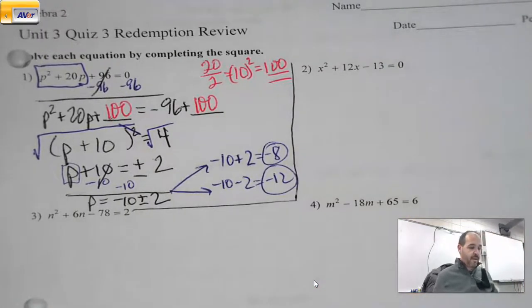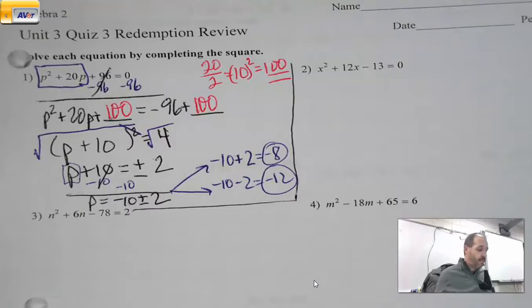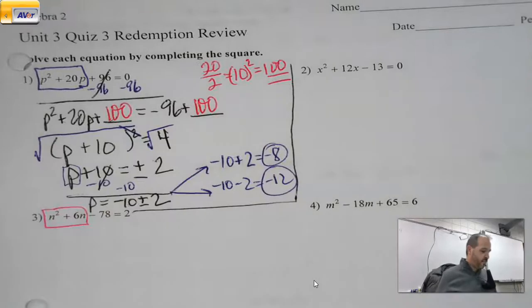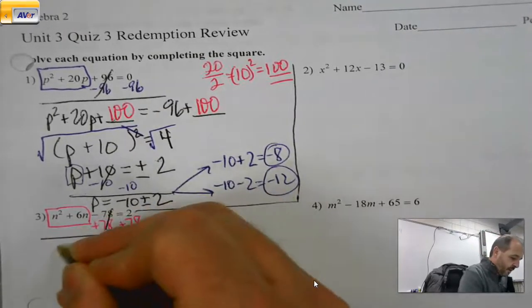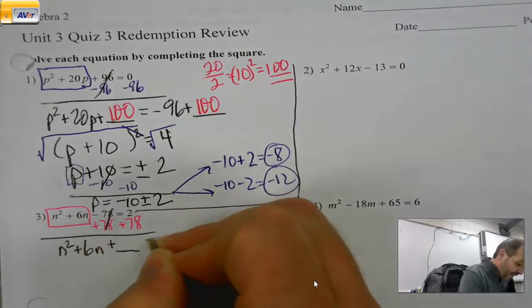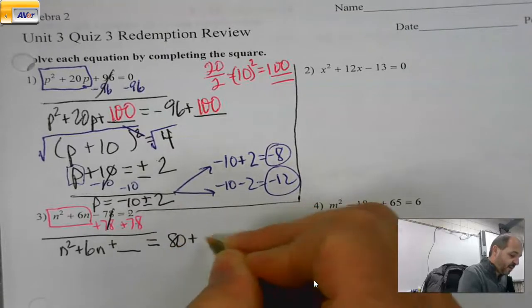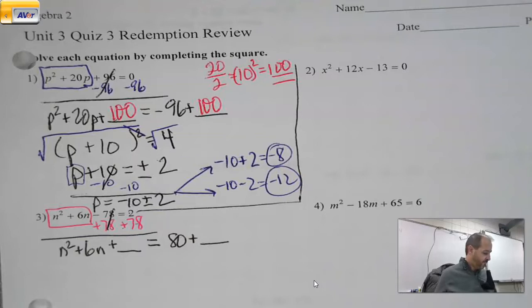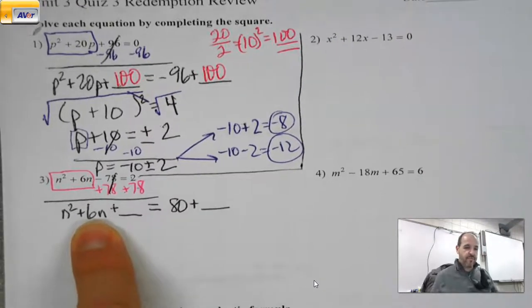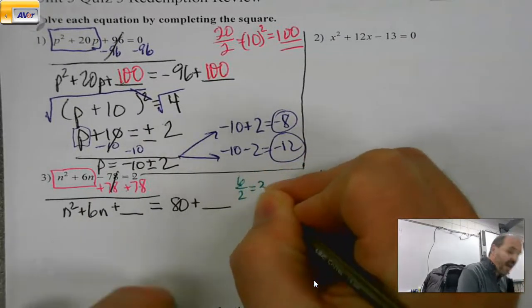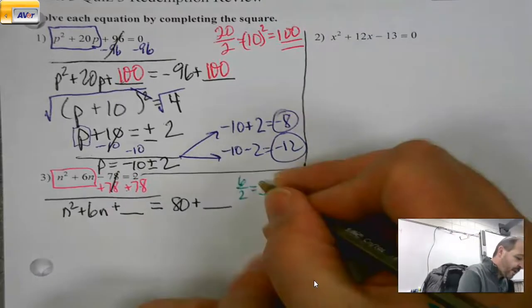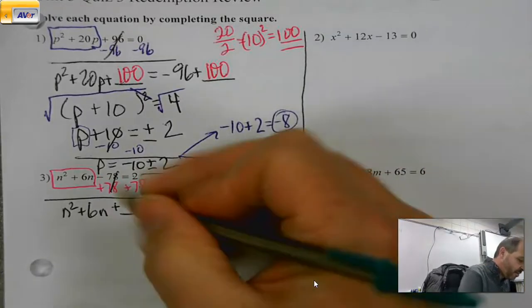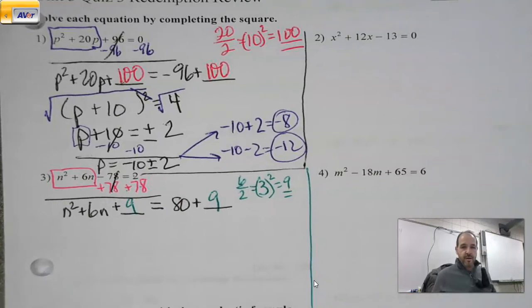Sometimes everything doesn't break down nice and easy. We're going to go down to number three. So I look and I'm like, let's use number one as our example. Get my variables alone. I've got to get the 78 out of there. N squared plus 6N plus blank equals 2 plus 78 is 80 plus blank. Take my N coefficient, my 6, divide it by 2. The nice thing about the video is you can pause me, you can rewind me, you can hear me say it as many times as you need to have it make sense for you.